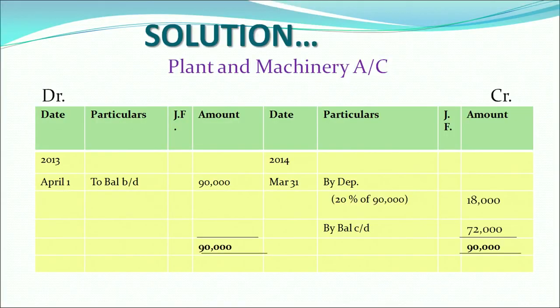On 1st April 2013, the balance brought down is rupees 90,000. On 31st March 2014, depreciation is charged at 20% not on the original cost but on the book value: 20% of 90,000 = rupees 18,000. The books are closed and the carried-down balance is 90,000 minus 18,000 = rupees 72,000.